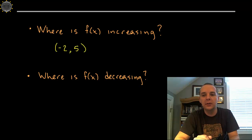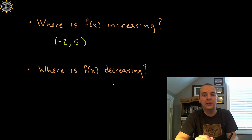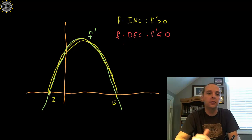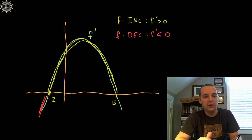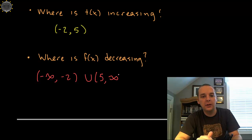They will give you those numbers — that's not something we'll typically make up. Now, where is the original function decreasing? That would obviously be where the derivative is negative. So wherever f prime is negative, or less than 0, then the original function would be decreasing. The derivative is hanging out below the x-axis down here and down here, so that would be from minus infinity to minus 2, union with 5 to infinity. Again, I stress — the original function is decreasing on those intervals.